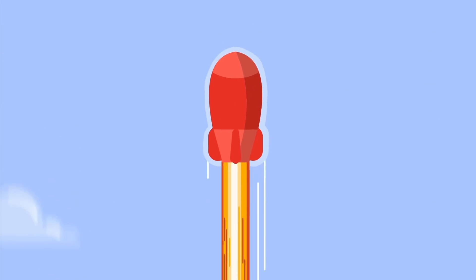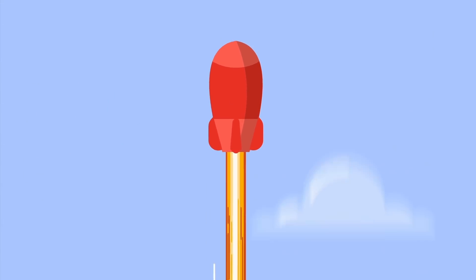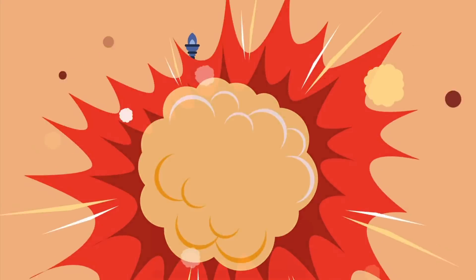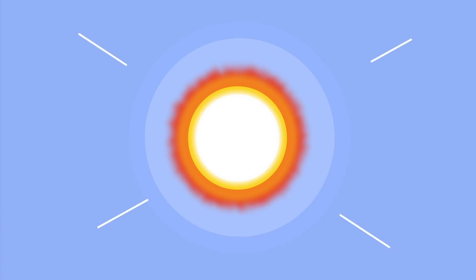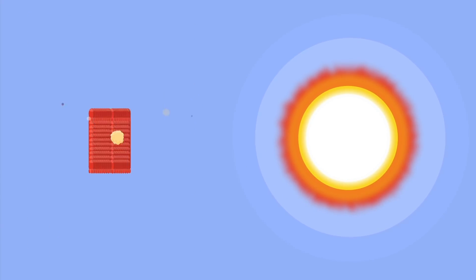Well, the largest nuclear bomb we've created so far is called the Tsar Bomba, destructive enough to flatten an entire city the size of New York. However, the Sun itself generates massive amounts of energy, equivalent to 1 billion Tsar bombs exploding every second.